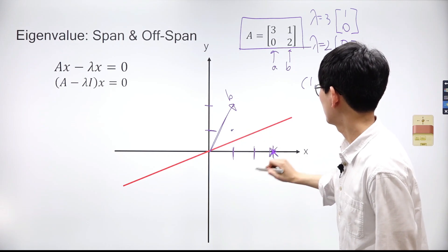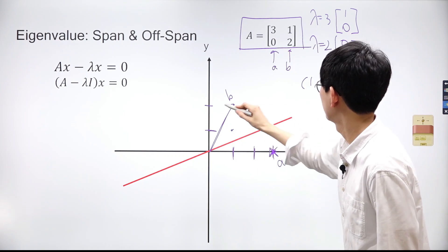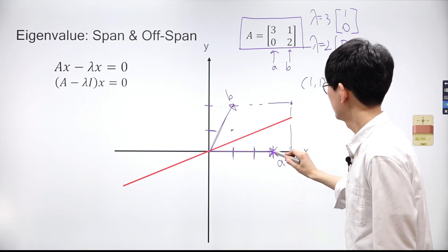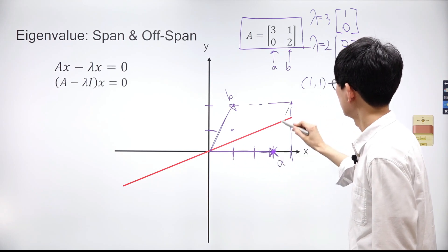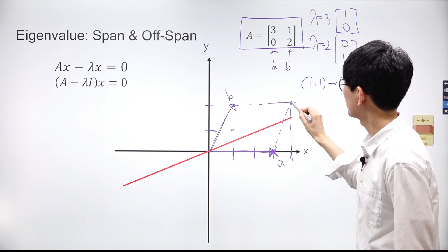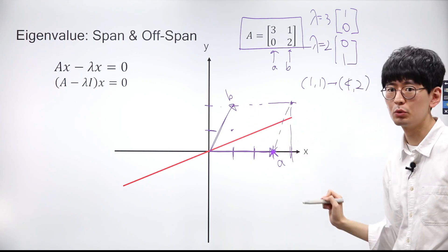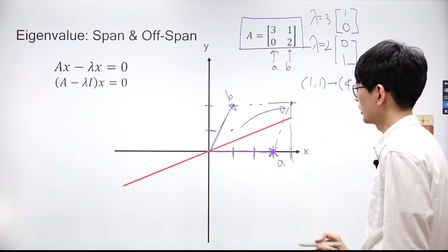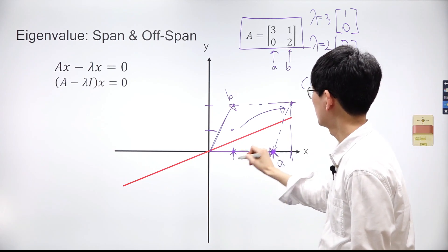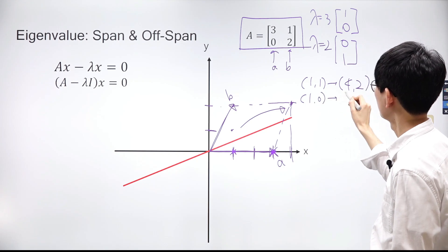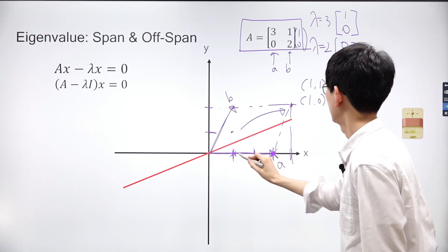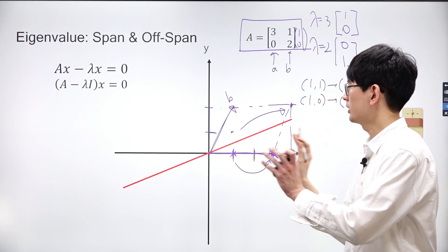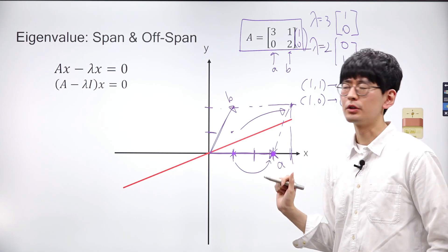Now let's examine why coordinates (1, 1) are shifted to (4, 2). From the endpoint of vector A, we can draw vector B, which eventually points to the coordinates (4, 2). In other words, the point at coordinates (1, 1) in the transform space is located at coordinates (4, 2) in the original coordinate system. What about coordinates (1, 0)? They will be shifted to new coordinates (3, 0). Using the matrix, we can transform a coordinate space and compare changes in coordinates on the plane.